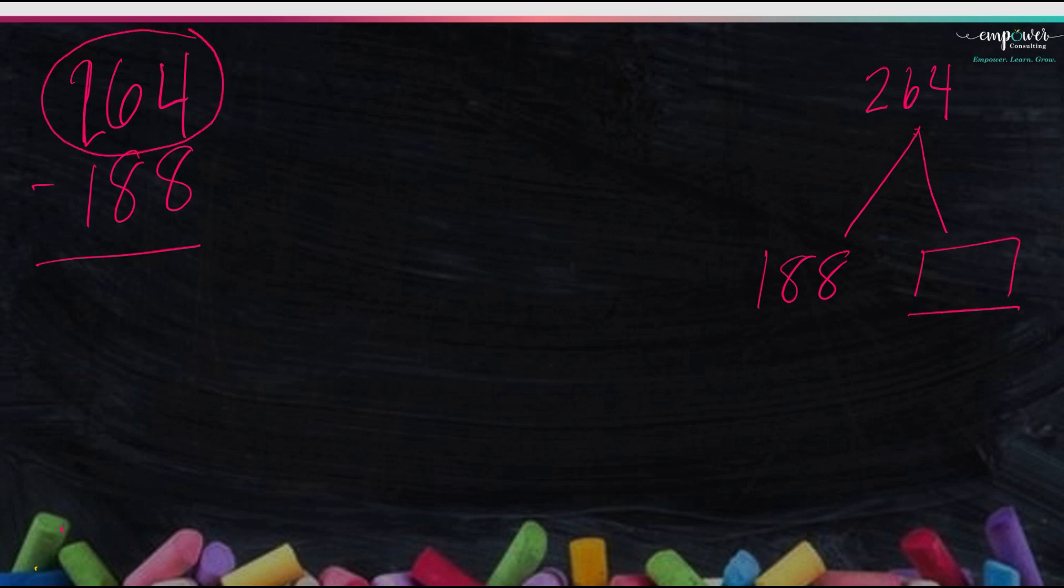So now let's try a new way. Let's try 164, and we're going to subtract. Well, actually, let's make that 264 minus 188. So again, I'm going to put it on my math mountain. I have 264 as my total. So 188 is one of my partners. I'm looking for my other partner.